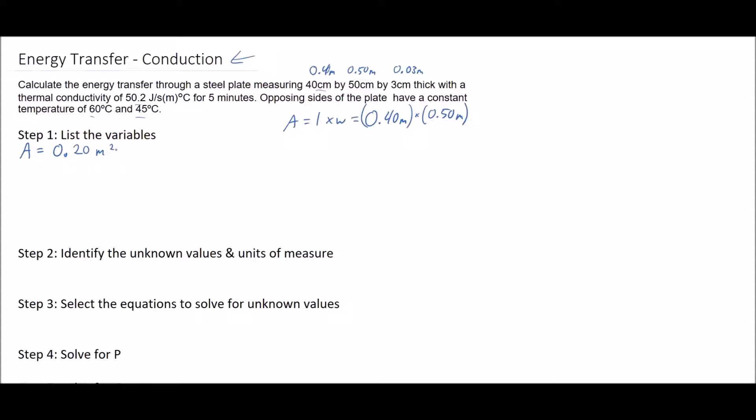k is our thermal conductivity from up here, so it's 50.2 joules per second meters degrees Celsius. Then we have L, our thickness of our plate or wall, which is where the three centimeter thickness comes in. We had to write it as meters, so it's 0.03 meters.